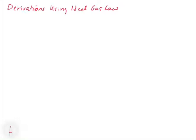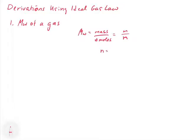In this video, we're going to look at how we can derive some equations from the ideal gas law. The first one is how we can get the molecular weight of a gas. The molecular weight is equal to the mass divided by the number of moles, which we summarize as m divided by n. Reorganizing, we can say that n is equal to m over the molecular weight.